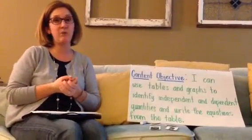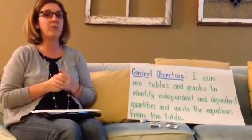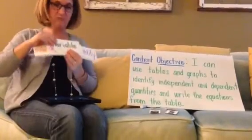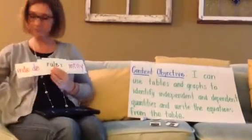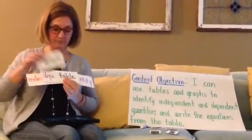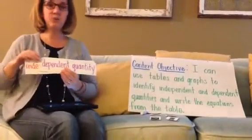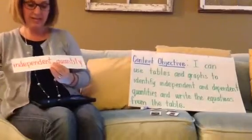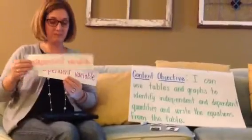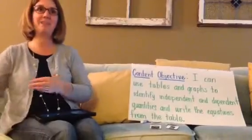We're going to use some academic vocabulary. Some of these words might be new to you, some might be familiar, but by the end of math we're all going to be using them. The key words are: variable, rule, graph, table, dependent quantity, independent quantity, independent variable, and dependent variable. We're going to be using these all throughout math today.